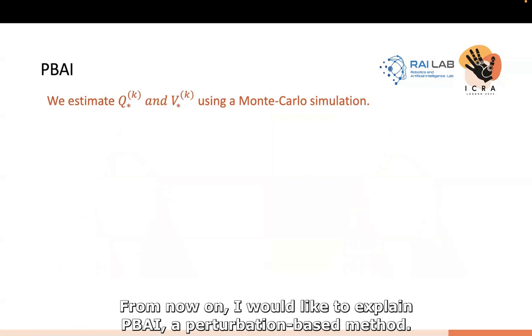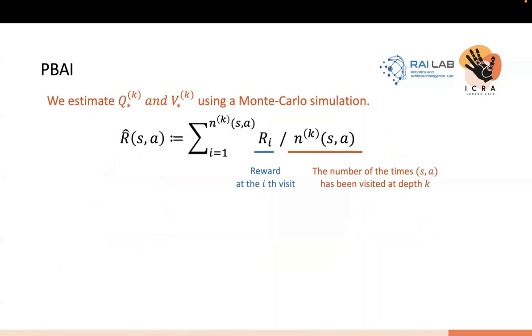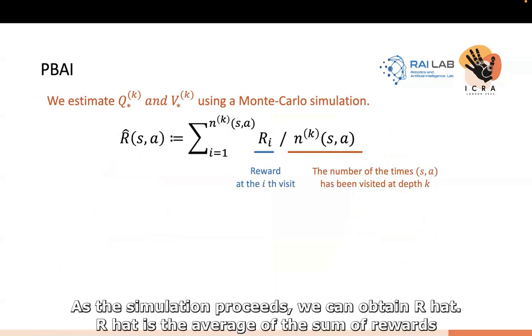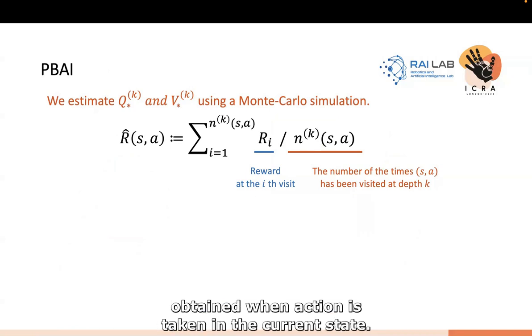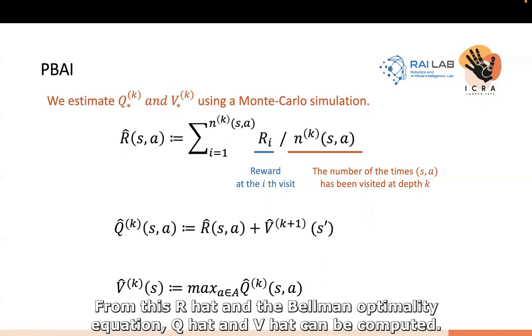From now on, I'd like to explain PBAI, a perturbation-based method. We need to estimate the optimal Q-star and V-star using Monte Carlo simulation. As the simulation proceeds, we can obtain R-hat. R-hat is the average of the sum of rewards obtained when action is taken in the current state. From this R-hat and the Bellman optimality equation, Q-hat and V-hat can be computed.